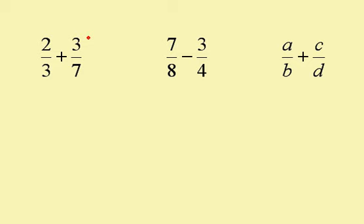To add these fractions together, I need to start by finding the lowest common denominator of 3 and 7. That number is 21. This is my denominator. 3 goes into 21 seven times, so I need to multiply the 2 by 7, which gives me 14.